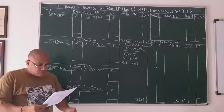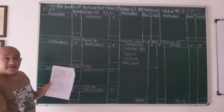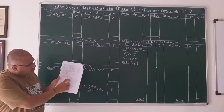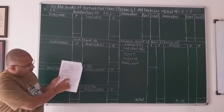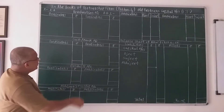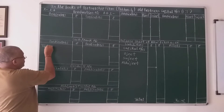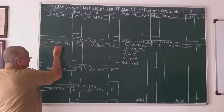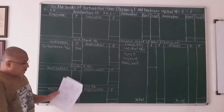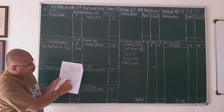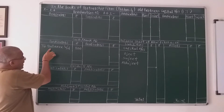Their balance sheet as on 31st December 1987 was as follows. In the asset side of the balance sheet, cash account is 800. This is recorded in the cash account on the debit side, to balance brought down, 800.